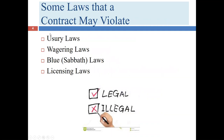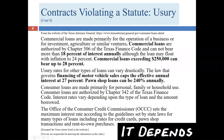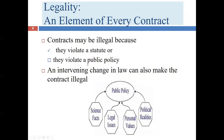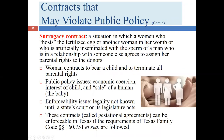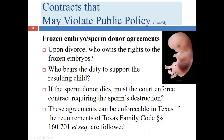We talked about usury laws, where a unlawfully high rate of interest is charged, wagering and gambling laws, blue and Sabbath laws, and licensing laws where somebody doesn't have the required license. We also discussed public policy issues including surrogacy and contracts relating to frozen embryos or sperm donations, pointing to the various statutes in these areas. In Texas, most of these public policy issues are also statutory issues.